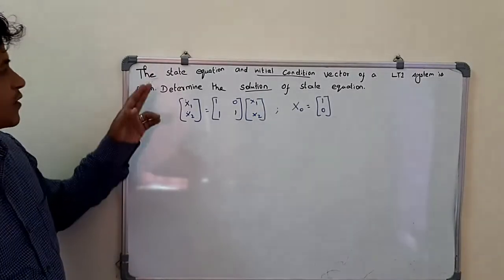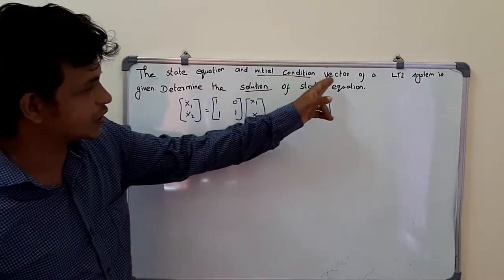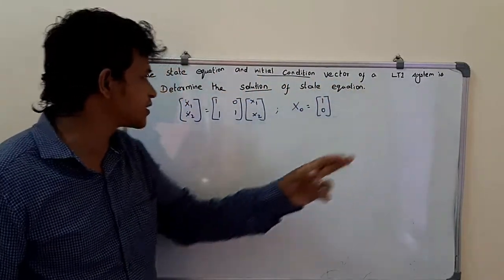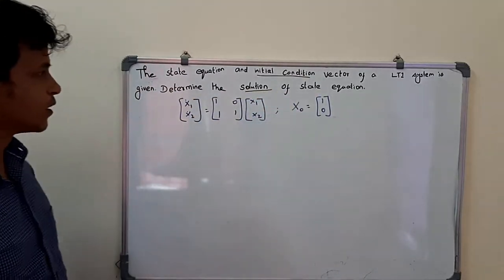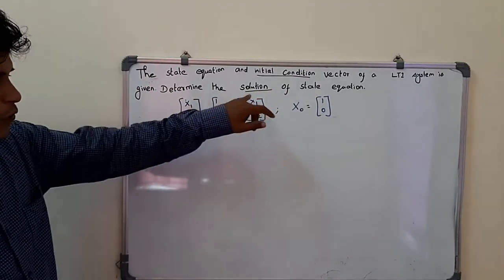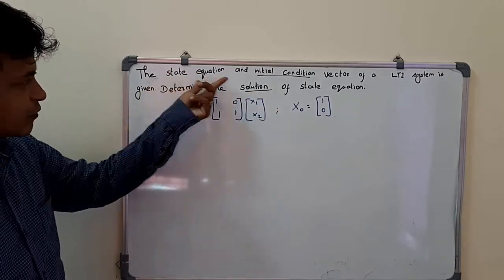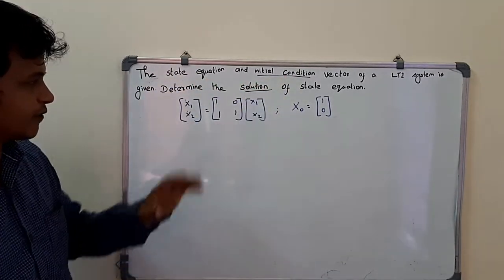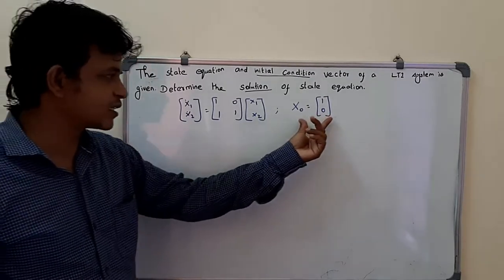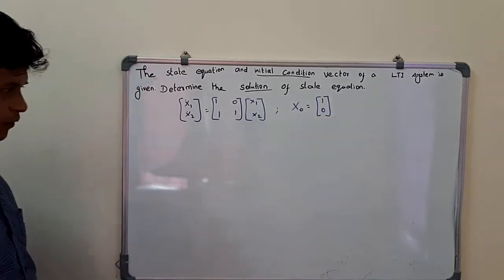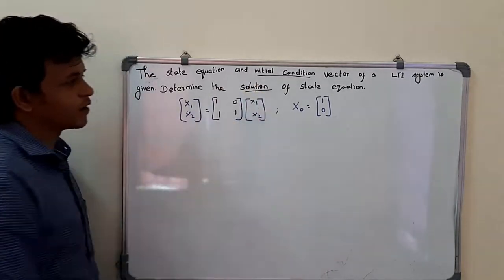The question given here is: the state equation and initial condition vector of a linear time-invariant system is given. We have to determine the solution of the state equation. This is the state equation and this is the initial condition vector.